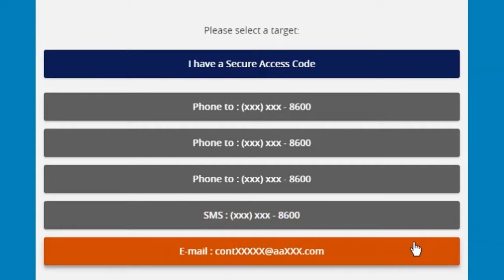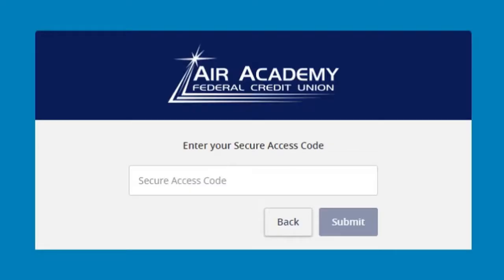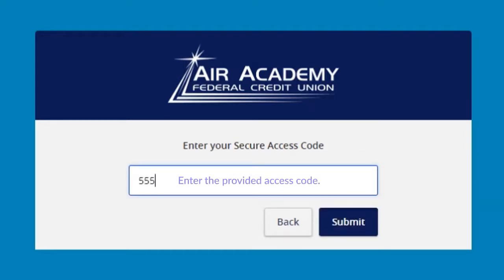If you choose the email option, a secure access code will be sent to the email account that we have on file. Choose where you would like your secure access code sent. Once you have received your secure access code, enter it in the box when prompted, then click Submit.